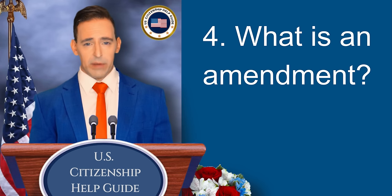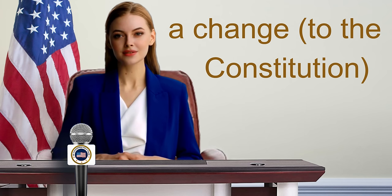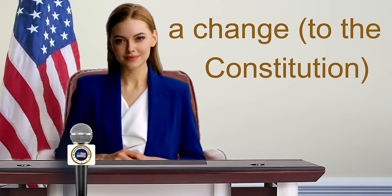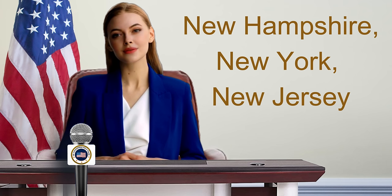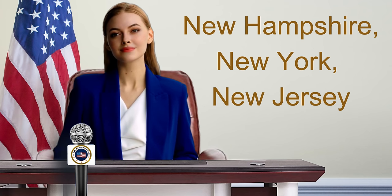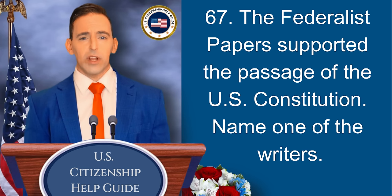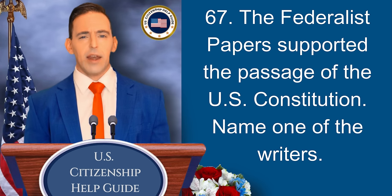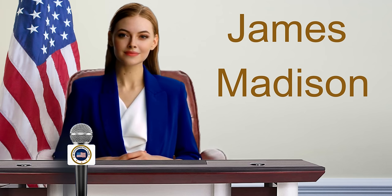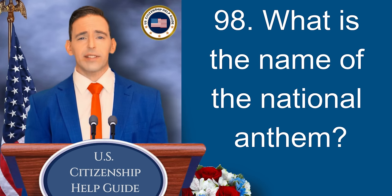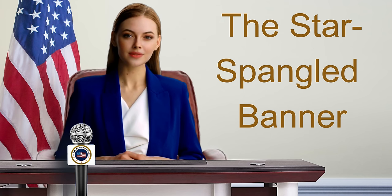What is an amendment? A change to the Constitution. There were 13 original states. Name three. New Hampshire, New York, New Jersey. The Federalist Papers supported the passage of the U.S. Constitution. Name one of the writers. James Madison. What is the name of the National Anthem? The Star-Spangled Banner.